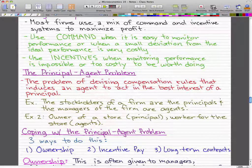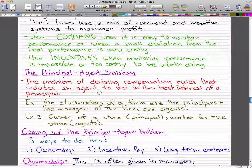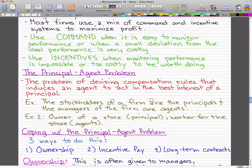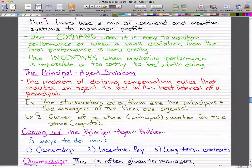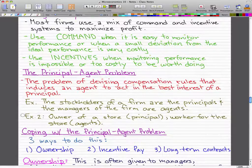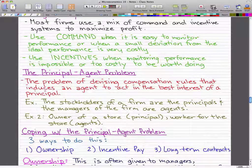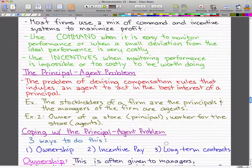This is the problem of devising compensation rules that induces an agent to act in the best interest of the principal. So for example the stockholders of the firm are the principals and the managers of the firm are the agents. Another example is the owner of the store is the principal and the workers of the store are the agents.